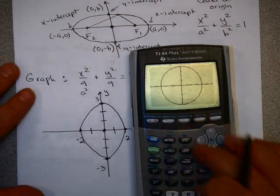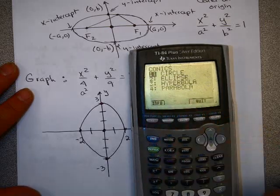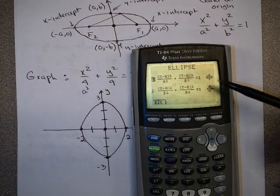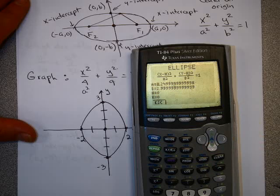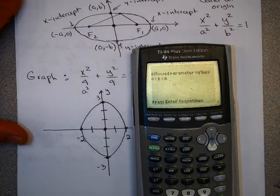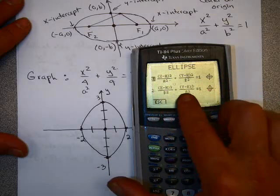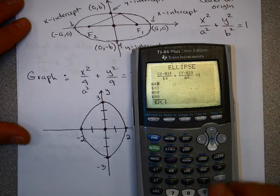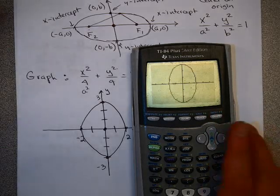Our conics program can help us. Go back to the conics program, pick ellipse — number 2. You want form number 1. Your center is 0, 0. a squared is 4 so a is 2, and b is 3. In this program, a is always bigger than b. So I let a be the number under y, which is 3, and b be the number under x, which is 2. Hit graph and you get the ellipse.